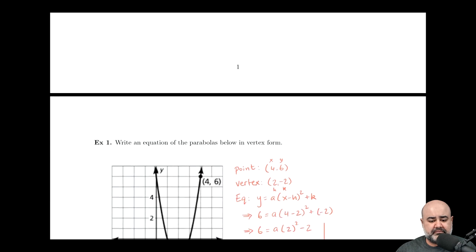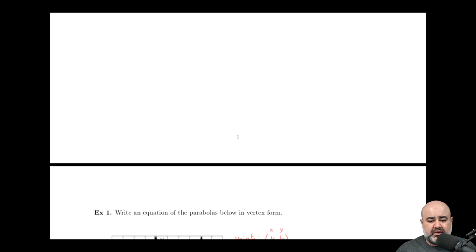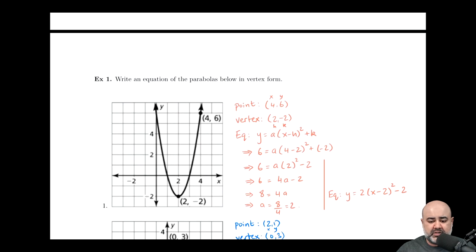Let's take a look at some examples. Here we have a type-one problem where we're given a vertex and a point. The vertex of this parabola is two comma negative two, and the parabola passes through the point four comma six. I prefer to start by writing my givens: the point is four comma six — annotated as x comma y — and the vertex is two comma negative two, annotated as h comma k. Using the vertex form equation, all we have to do is plug in the numbers where they belong.